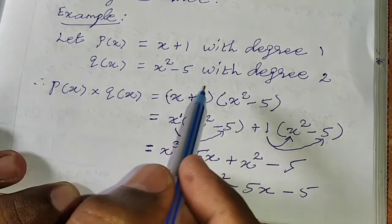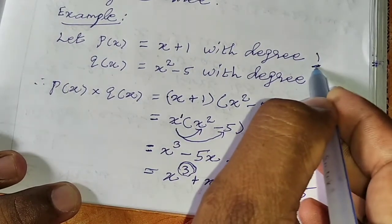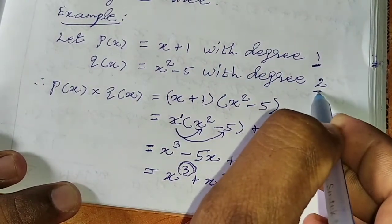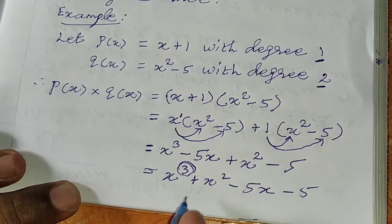This is simple. What is the condition? The degree is 1, and the degree is 2. If you do this, what is the cubic polynomial? There is a cubic polynomial.